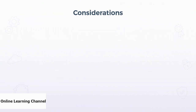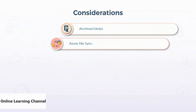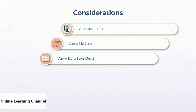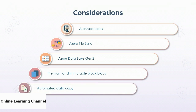Geo-replication storage accounts will replicate archive blobs; however, they will require re-hydrating prior to re-enabling geo-redundancy. Storage account failovers are not supported by Azure File Sync. Enabling the Azure Data Lake Generation 2 hierarchical namespace will disable geo-replication capabilities. Premium and immutable block blobs do not support geo-redundancy failover operations. For situations where performing the failover operation is not desirable, copying data out of the secondary region into a third region for application access can help remove the overhead of having to re-enable geo-redundancy and failback data to the primary region.